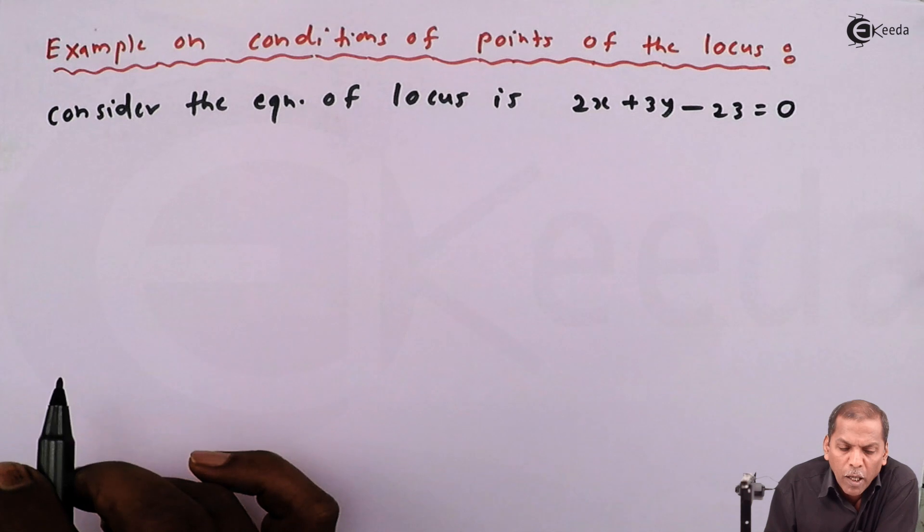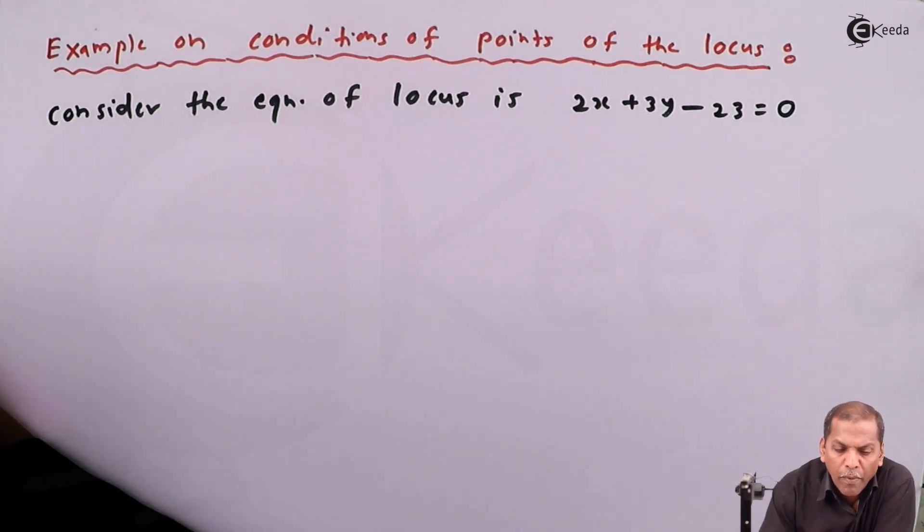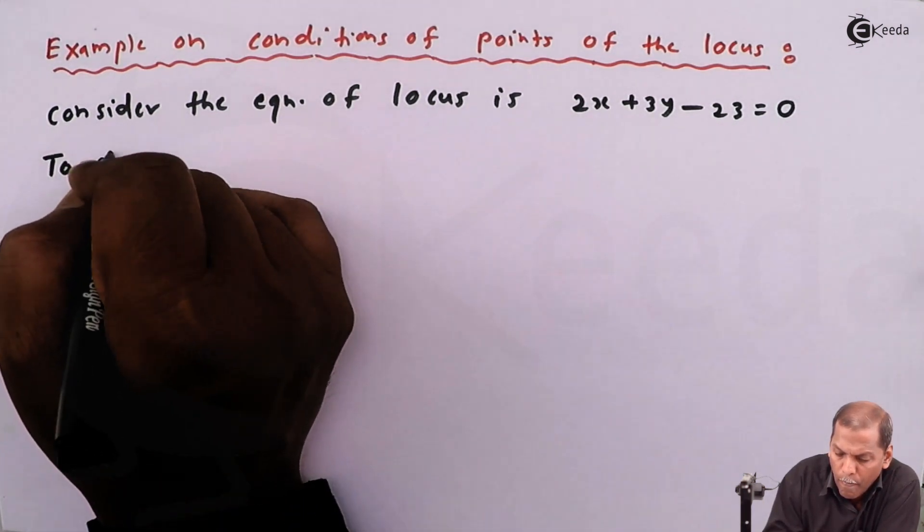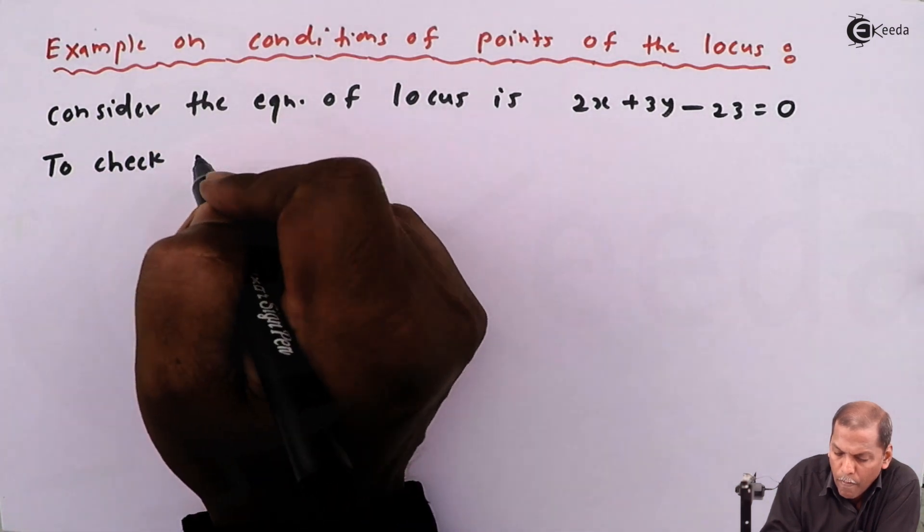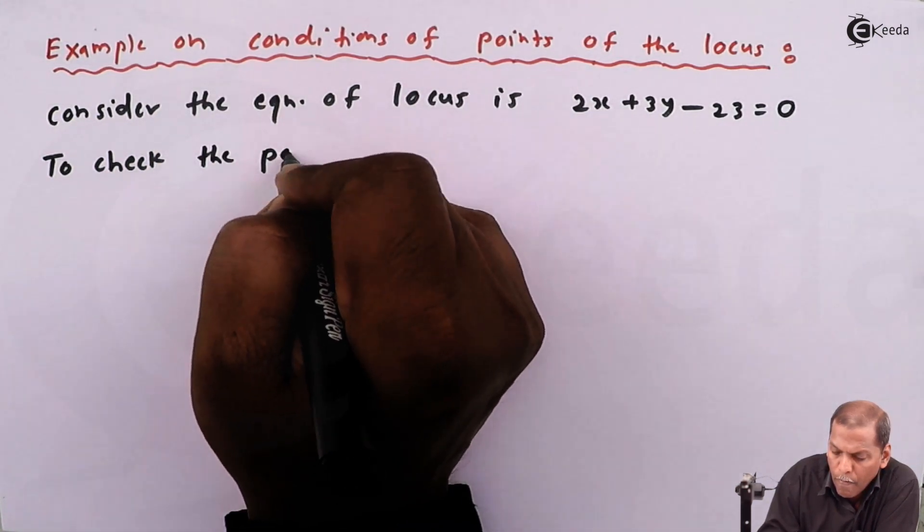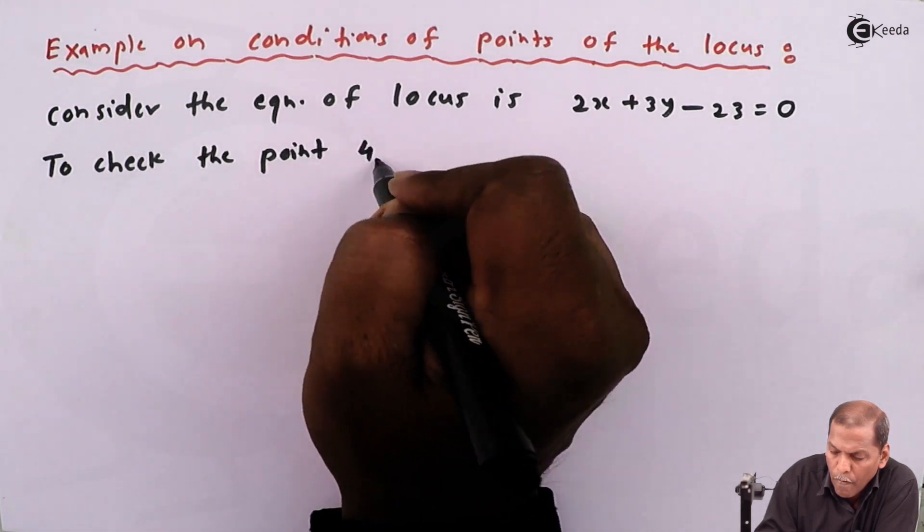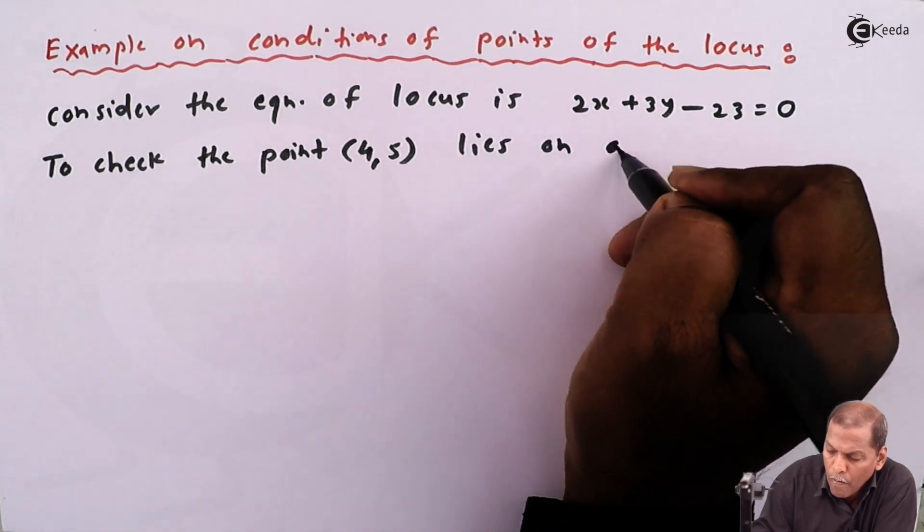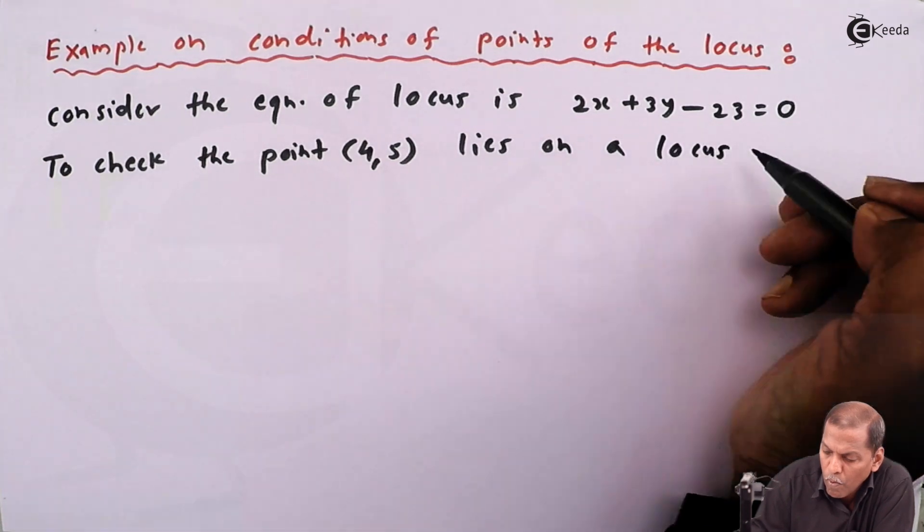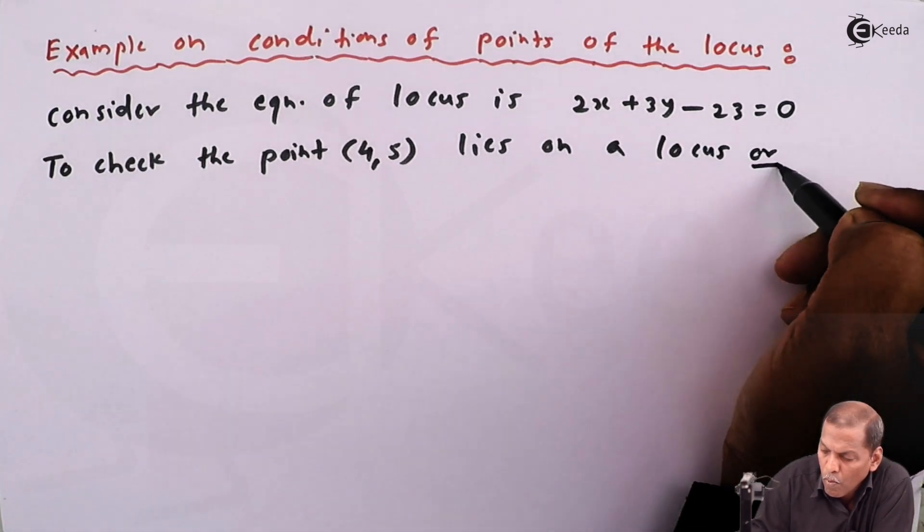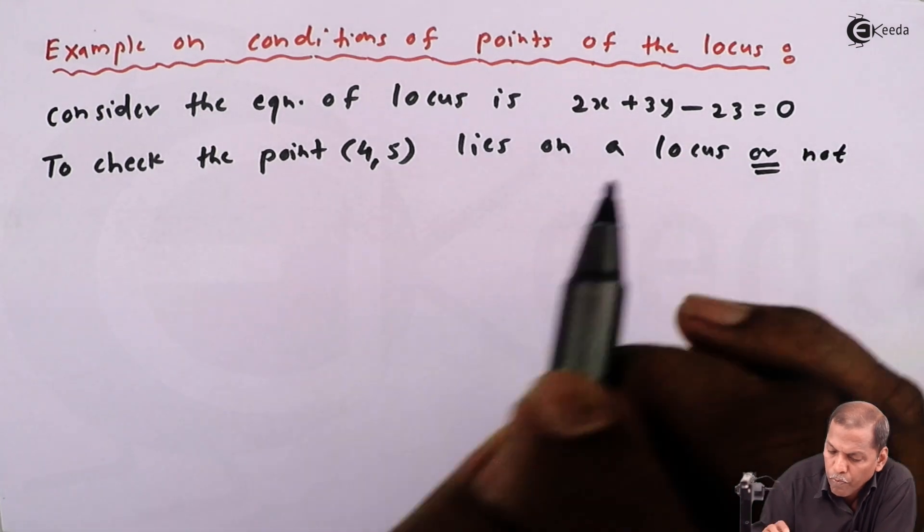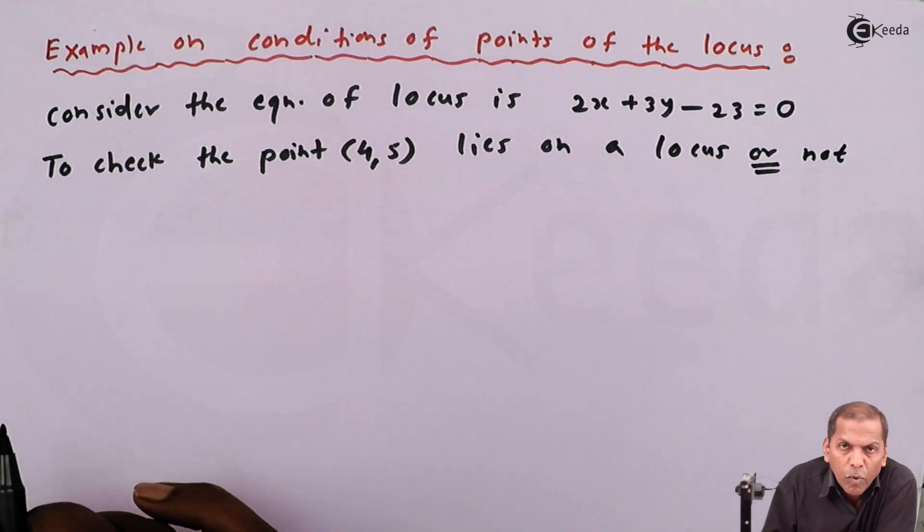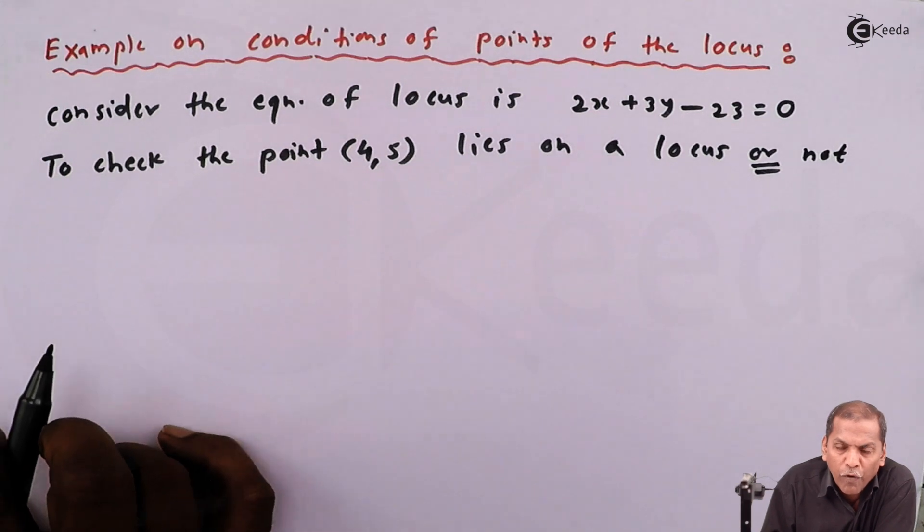We have to check if the point lies on it or not. First of all, we consider the left hand side of equation of locus.